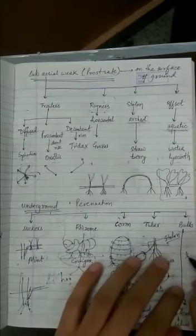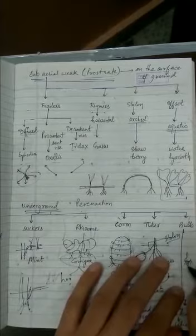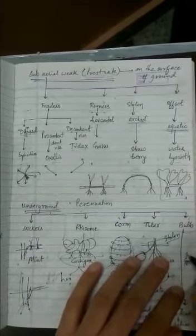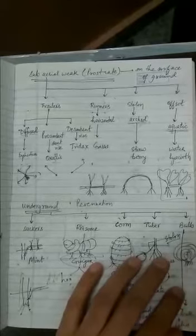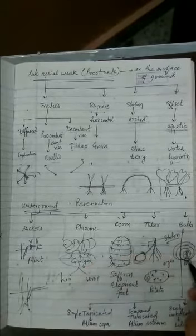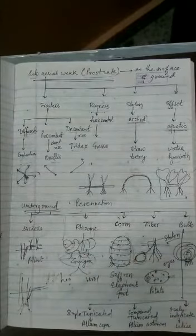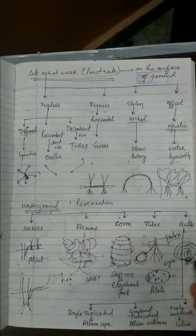So when you open onion, we always find there is a disc-like structure present like this at the base, which has roots below. And then large number of scaly leaves are arranged like this. So this is the discoidal stem. So it has a reduced discoidal stem. And then there are several scaly as well as fleshy leaves.